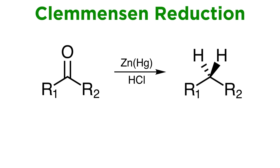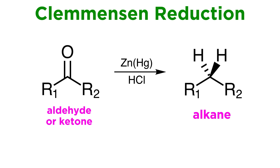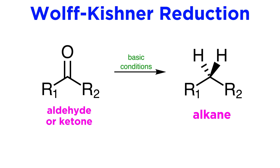Earlier in the series we learned about Clemmensen reduction, which is a way to reduce aldehydes and ketones all the way down to the alkane, thereby removing an oxygen atom entirely. This is performed in the presence of zinc and hydrochloric acid. However, there is an alternative method that will achieve this transformation under basic conditions, which can be a useful technique, and this is called Wolf-Kishner reduction.